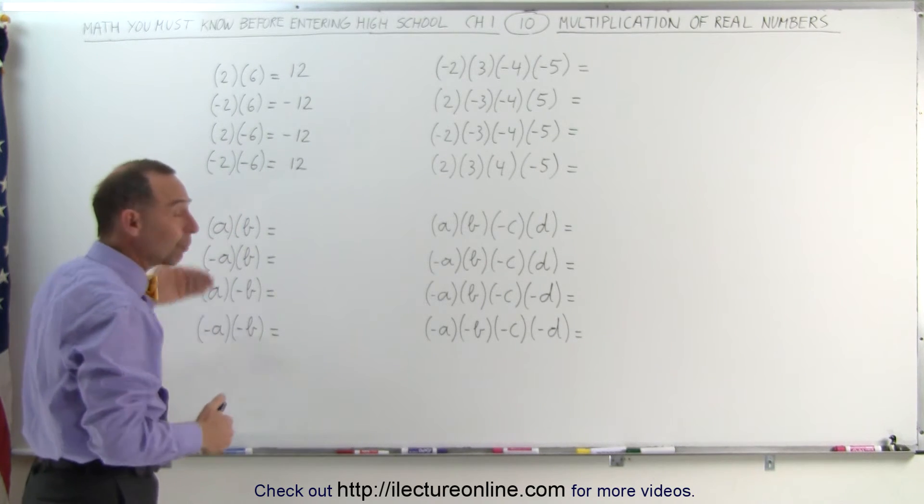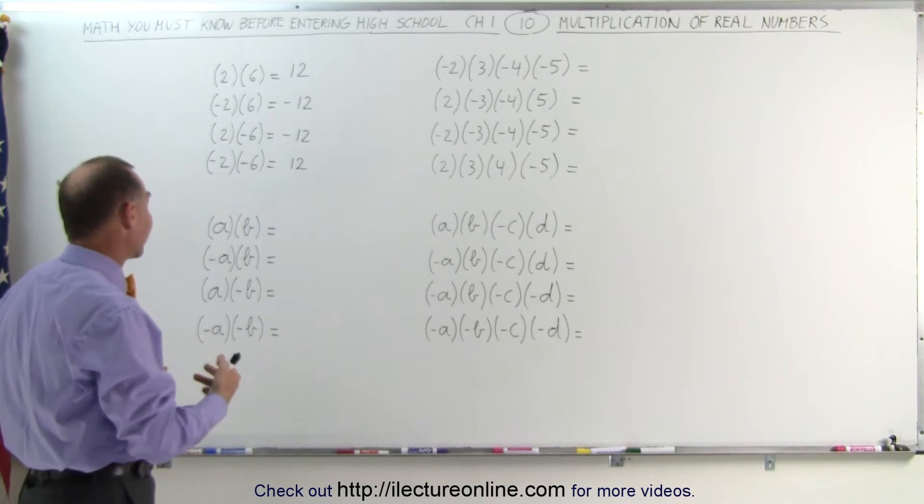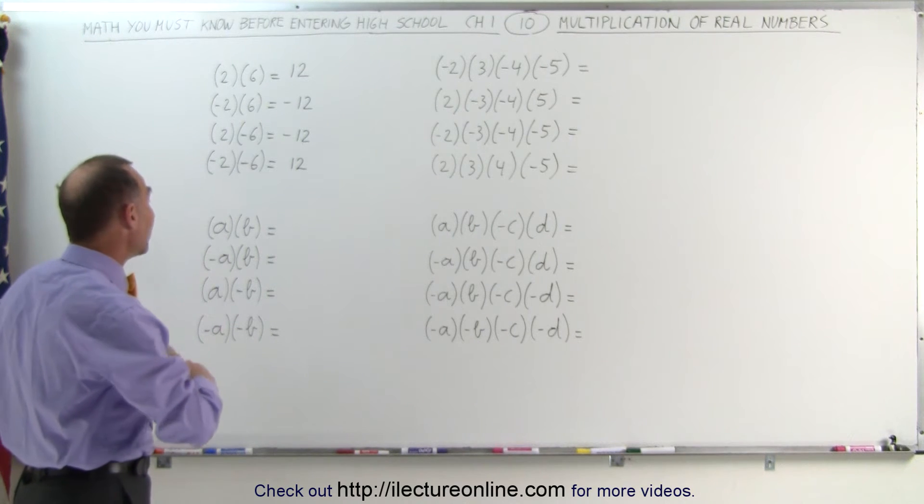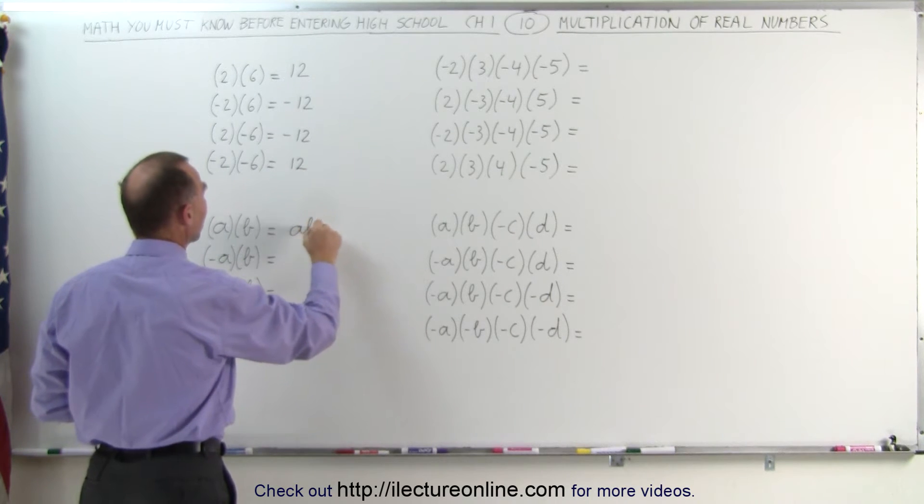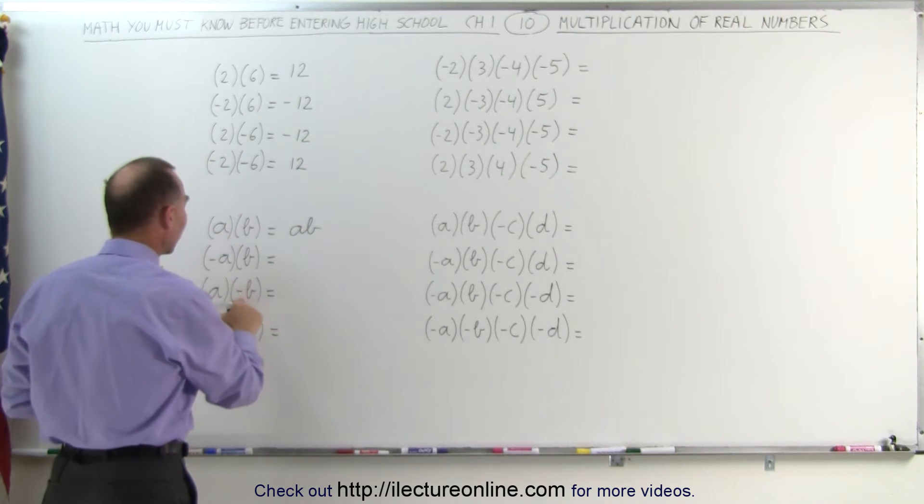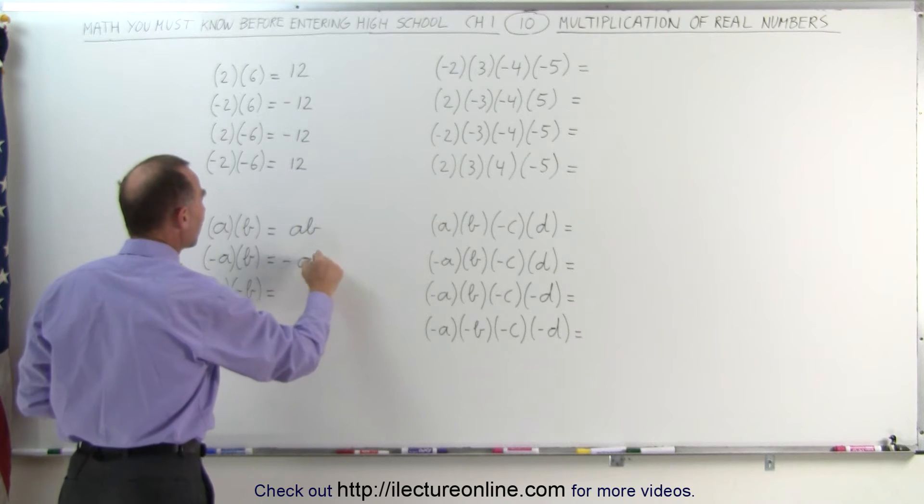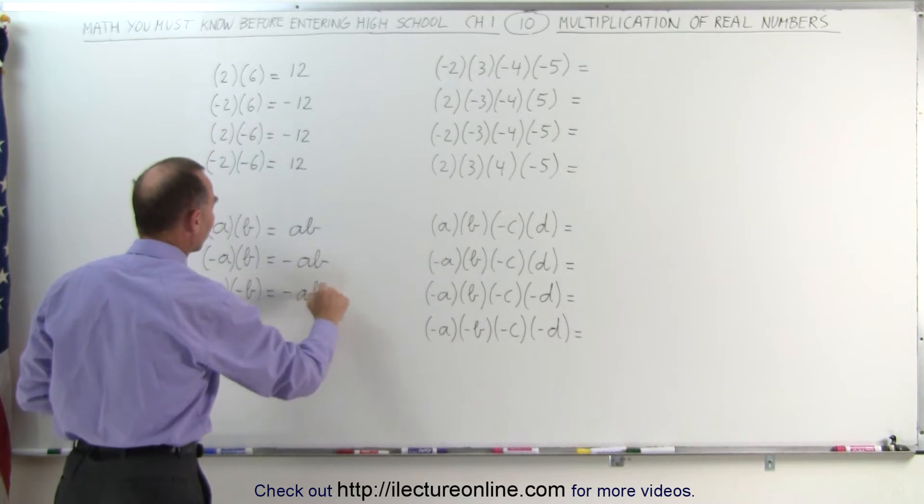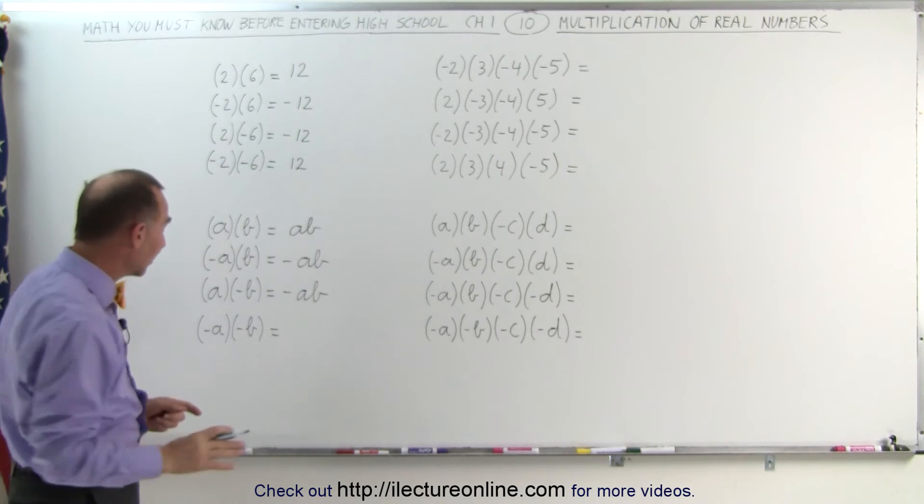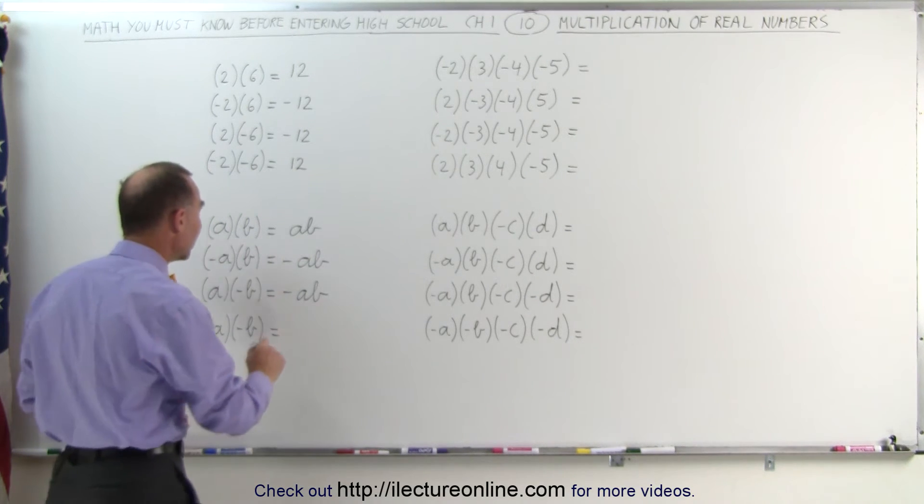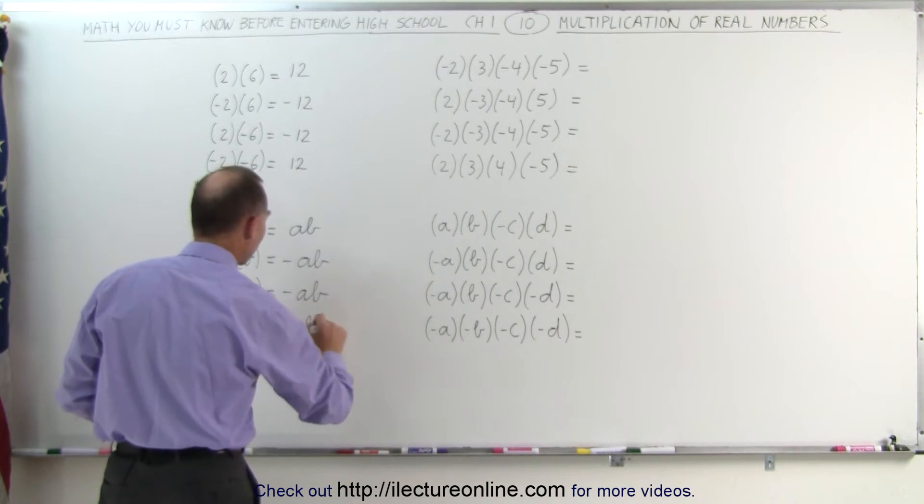Instead of numbers, if you use letters to represent numbers, like a and b, or x and y, the rule is the same. a times b, if they're both positive, the answer will be ab. If one of them is negative, that will be negative ab, and negative ab. It doesn't matter if the a is negative or the b is negative. And when both are negative, minus a times minus b, that gives you a positive ab.